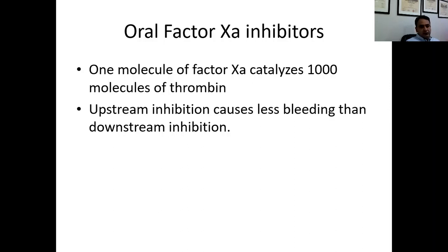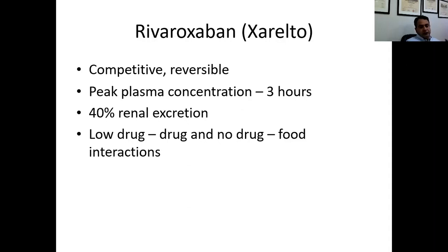Moving on to the oral Factor Xa inhibitors: one molecule of Factor Xa catalyzes about a thousand molecules of thrombin, so upstream inhibition causes less bleeding than downstream inhibition. The first to reach the market was rivaroxaban, known as Xarelto in the US. It is a competitive and reversible inhibitor of Factor Xa. Peak plasma concentration is about three hours, it is 40% renally excreted, and there is very minimal drug-drug or drug-food interaction.